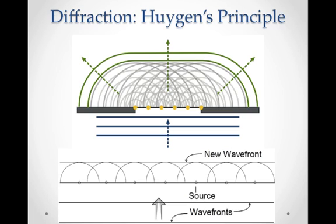Christian Huygens created a model for wave behavior that does a great job of explaining why waves diffract when they go around or between barriers. He visualized a solid wave front being produced by a source and propagating forward — a top-down view — and he imagined that wave front being made up of a whole bunch of tiny point sources, each like tapping in a ripple tank.